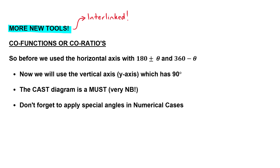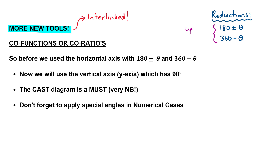Just to remind you, in the second video we dealt with trig reductions. I showed you a proof of where we found them. As long as you understand how to apply those reductions, we figured out that the reductions were 180 plus or minus theta and 360 minus theta. By finding these reductions we could update our CAST diagram, and in this video where we start dealing with co-functions we're going to have another update to that CAST diagram.